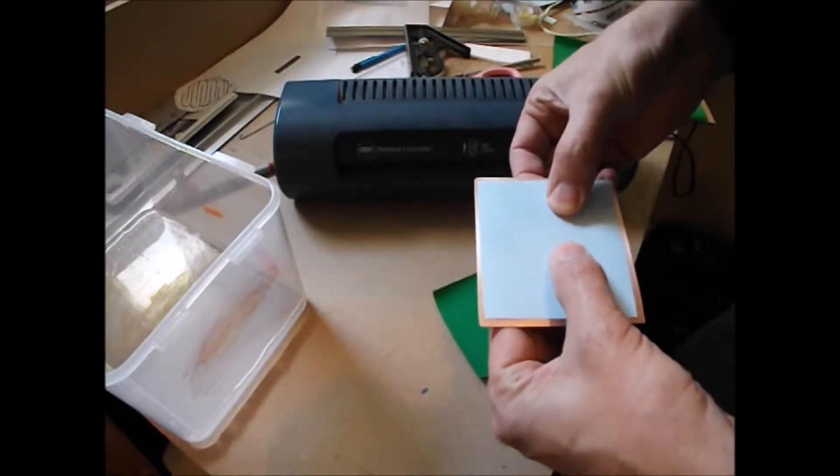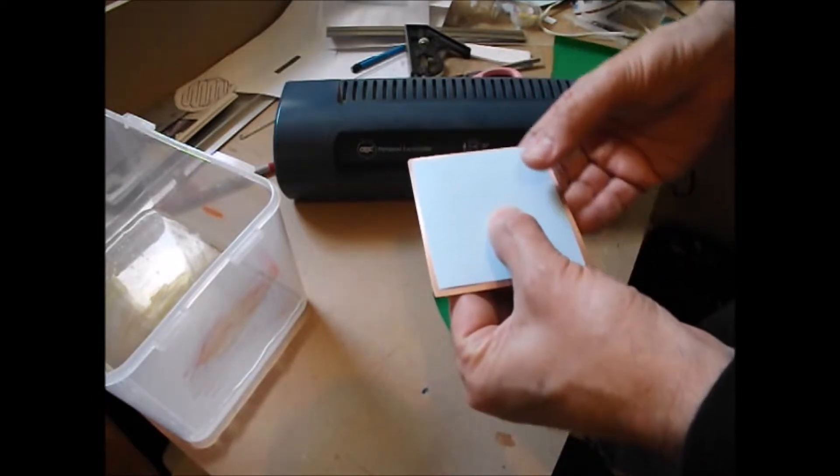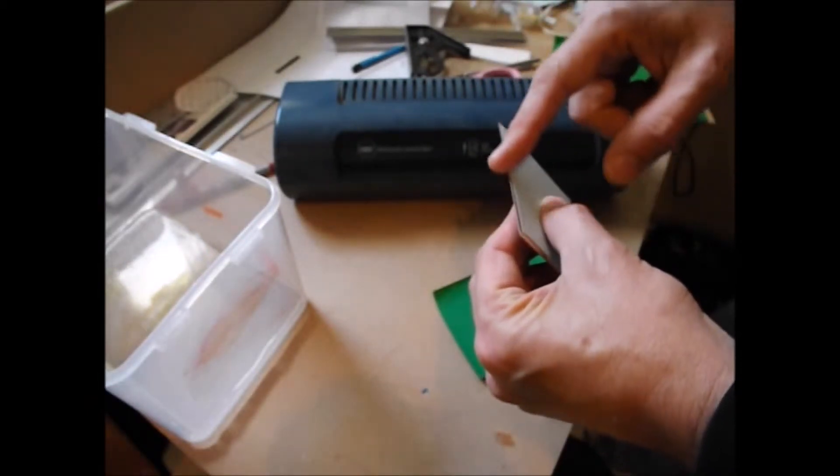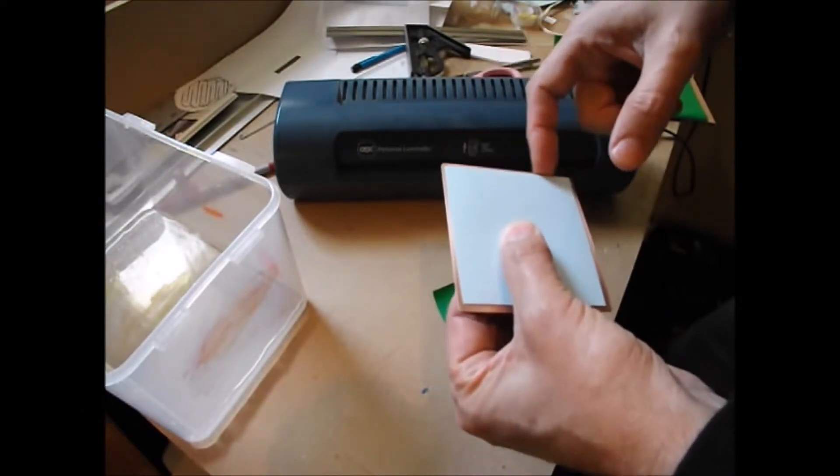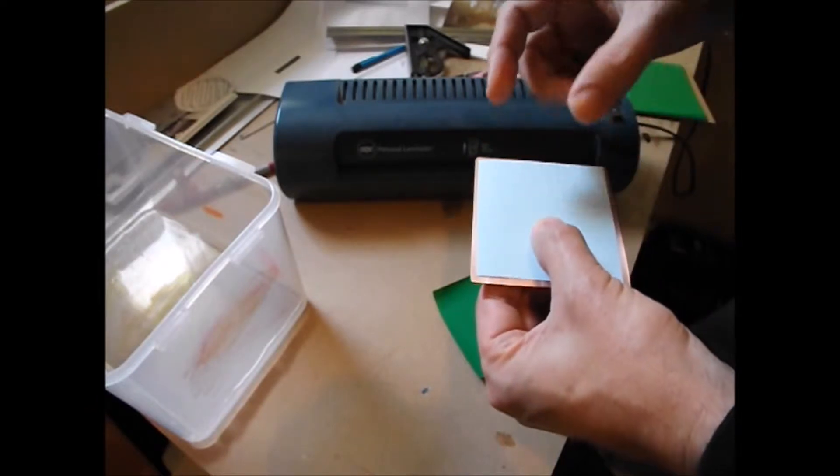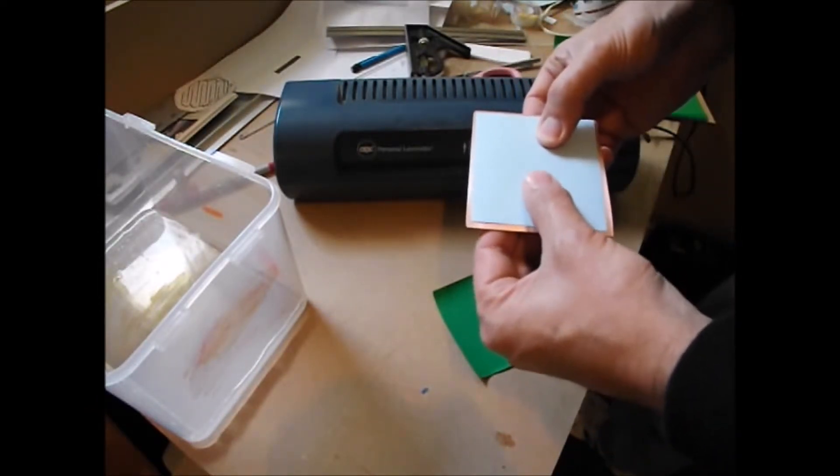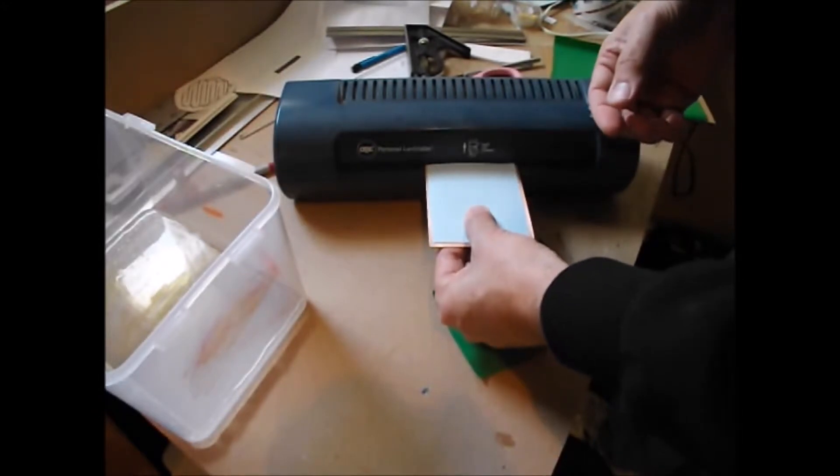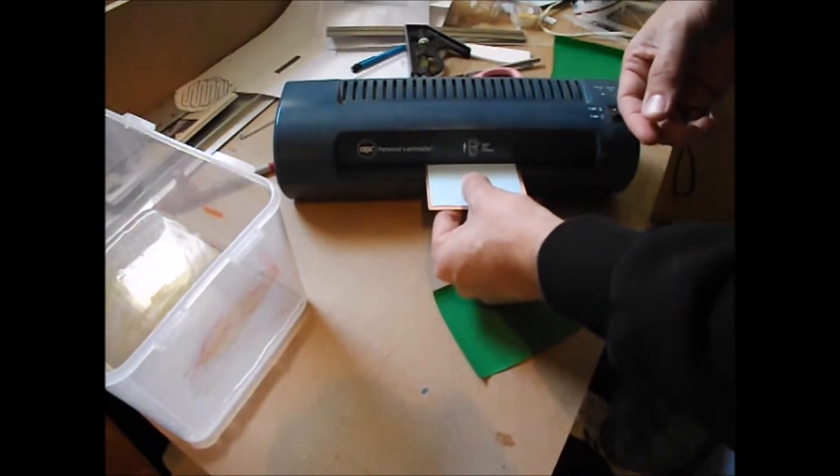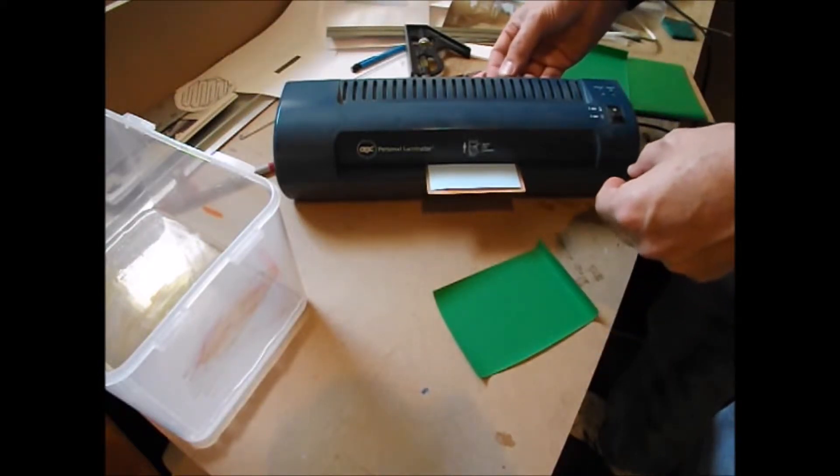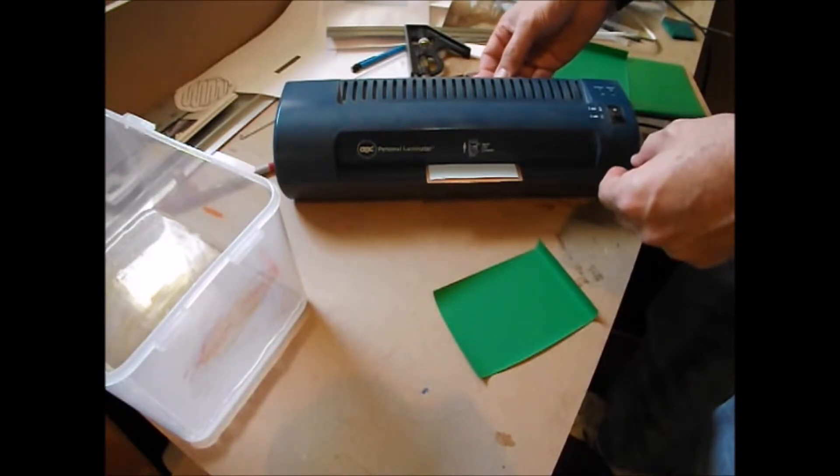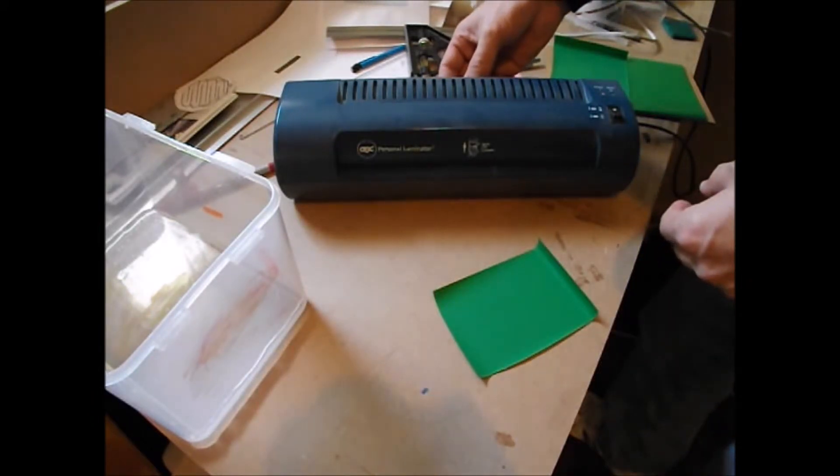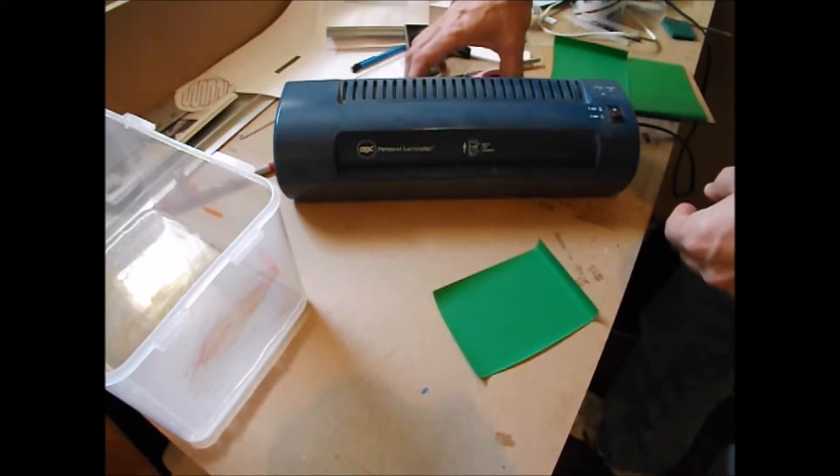Now, when you use a laminator like this you typically put a sleeve over the document that you're laminating. But this is 032 fiberglass copper clad and it is thick enough that you don't need to use the sleeve. If you're using a flexible, thinner flexible printed circuit board you probably should use the sleeve over it. But you just feed it in and it comes out the other end and it will be hot when it comes out.